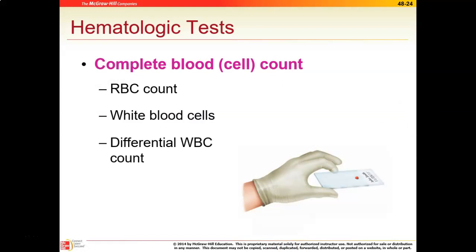A CBC can give us a lot of information and is a very commonly performed test. A complete blood cell count gives us quite a bit of information — we can diagnose a host of different blood disorders and even blood cancers just by doing a CBC. Different kinds of anemia can be diagnosed, different leukemias, polycythemia — there are a lot of different blood disorders that can be diagnosed just by doing a CBC.